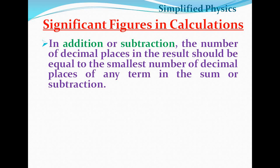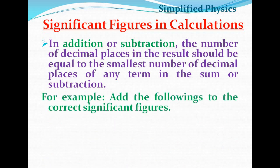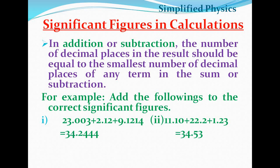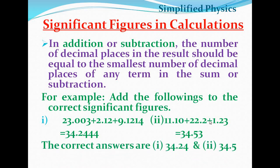For significant figures in calculations — in addition and subtraction, the number of decimal places in the result should equal the smallest number of decimal places of any term in the sum or difference. For example, adding numbers with four, three, and two decimal places respectively, the correct result should be expressed to two decimal places. If the least decimal places is one, the answer must have only one decimal place.